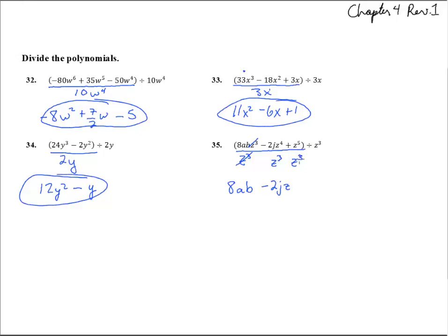And then the last one, z to the 5th over z cubed - we just subtract those exponents, and we get z squared. Good.